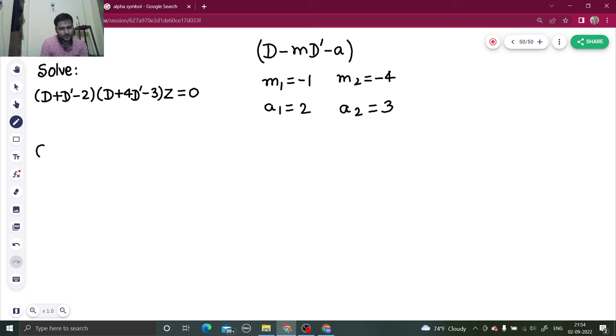Because you have got these values of m1, a1, m2, a2, this is a one step process to find and write the complementary function which is e power a1x, so e power 2x f1(y plus m1x), so y minus x, plus e power a2x. A2 is 3, so e power 3x, y plus mx, m is minus 4, so y minus 4x.